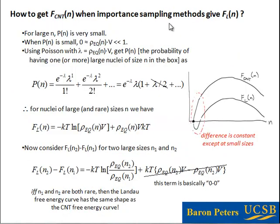What I want to show is how you actually compute the free energy for classical nucleation theory when it's most natural to obtain the free energy from rare events methods like umbrella sampling, which naturally give you the Landau free energy. How do we go from the Landau free energy to the classical nucleation theory? Let's consider two cases: when n is very large, and when n is very small, because the answer depends on where we are.